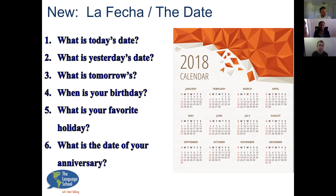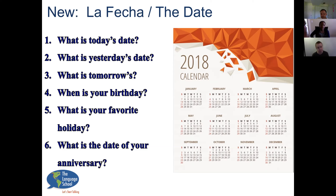Megan, what is yesterday's date? Yesterday's date is June 9. And what is tomorrow's date? Tomorrow's date is June 11. Megan, when's your birthday? My birthday is May 11. Oh, you just had a birthday! Happy birthday — just one month late. Frances, what is your favorite holiday? My favorite holiday is December 25. In the United States, Christmas is always celebrated on December 25, though in Latin America it's often celebrated on the 24th. What is the date of your anniversary, Frances? It is December 30.